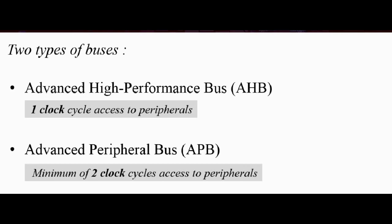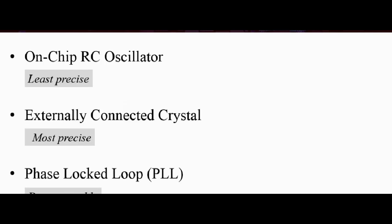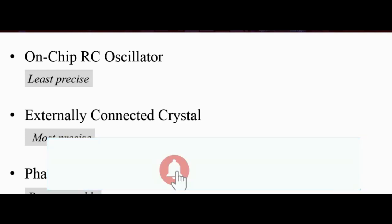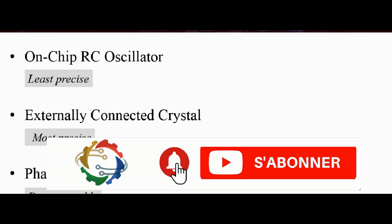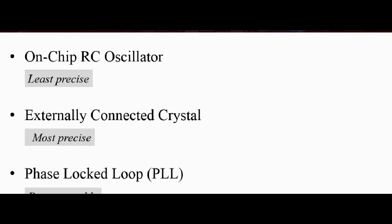And also we said there are two buses, the advanced high performance bus and the advanced peripheral bus. And then we stated our clock sources here, on-chip RC oscillator, externally connected crystal, and the phase lock loop. So this is a very quick overview. We're going to spend a lot of time in the documentation, visiting each and every one of these. So you can think of this lesson as getting used.